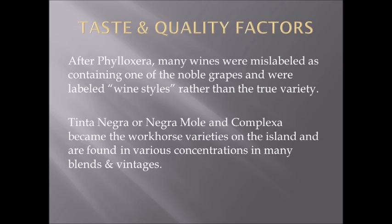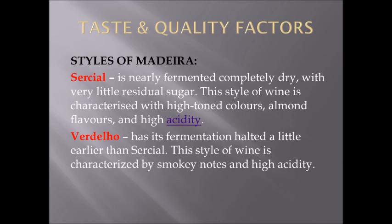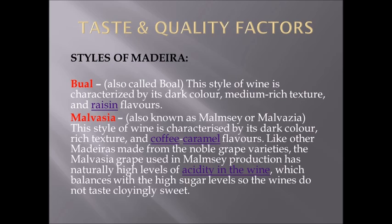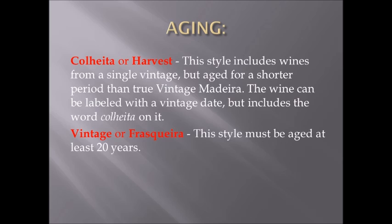The varietals of Bordeaux: for red, Cabernet Sauvignon at 25% dominates the left bank; Merlot at 62% dominates the right bank; Cab Franc at 12%; Petit Verdot, Malbec, and Carménère make up 1%. For white: Sauvignon Blanc 36%, Sémillon 54%, and Muscadelle at 7%.